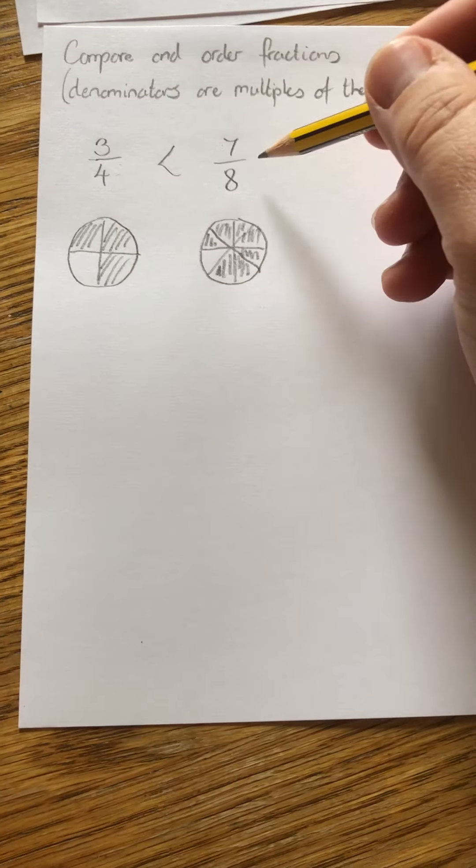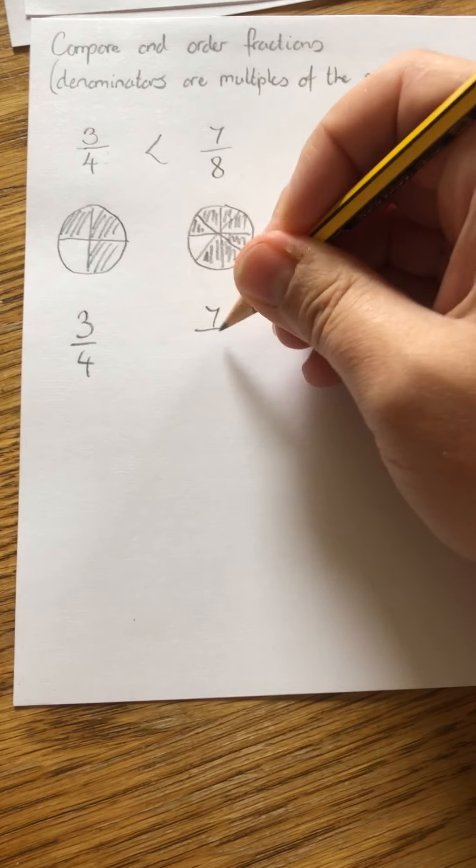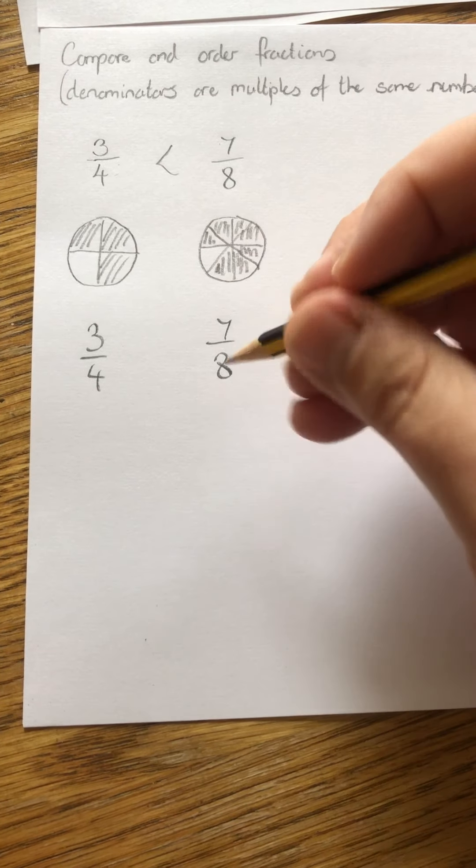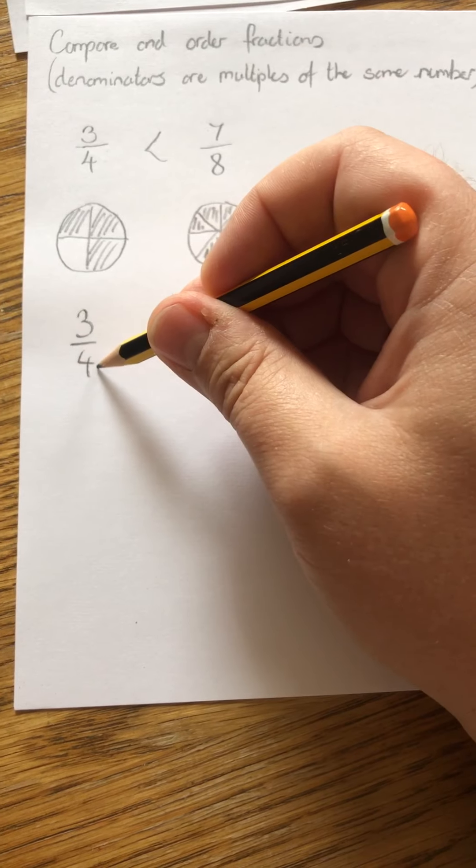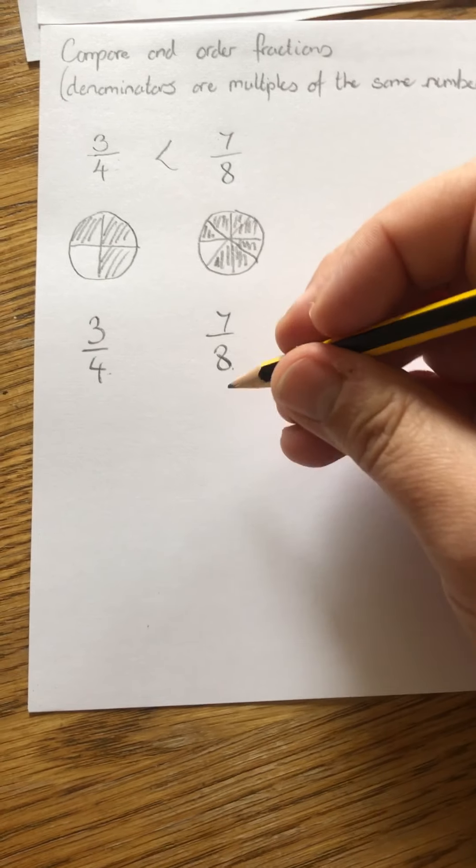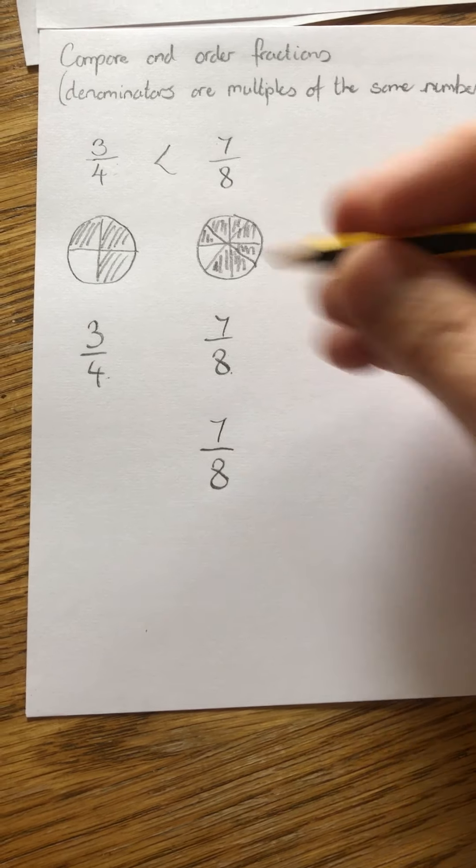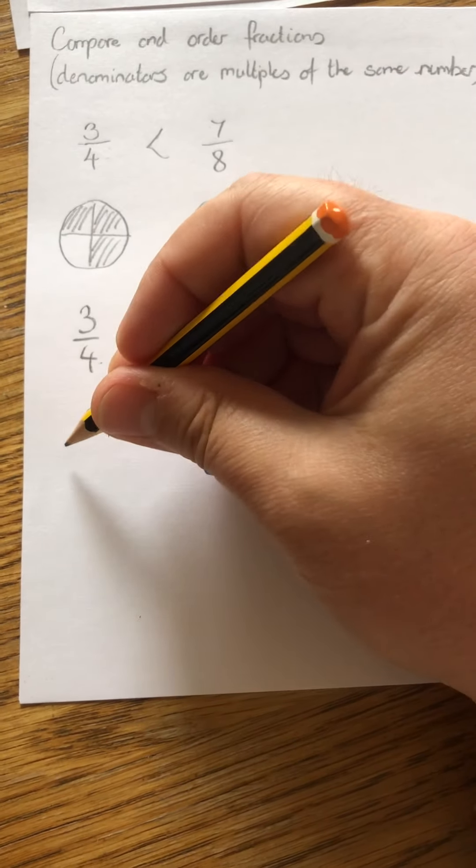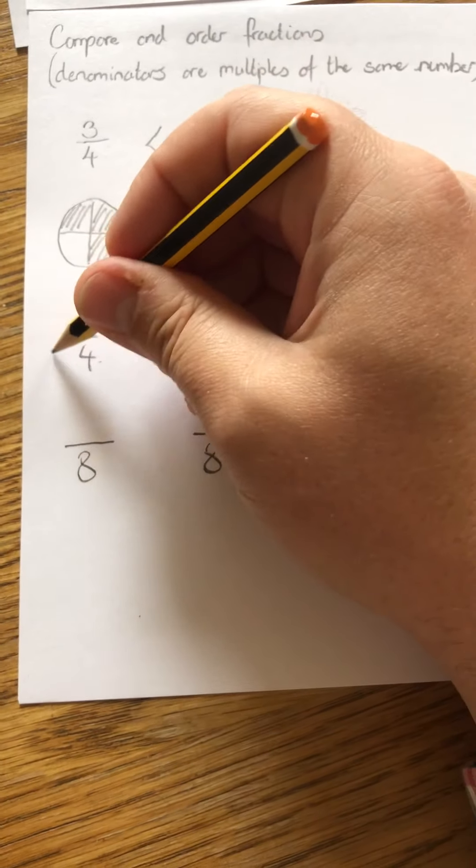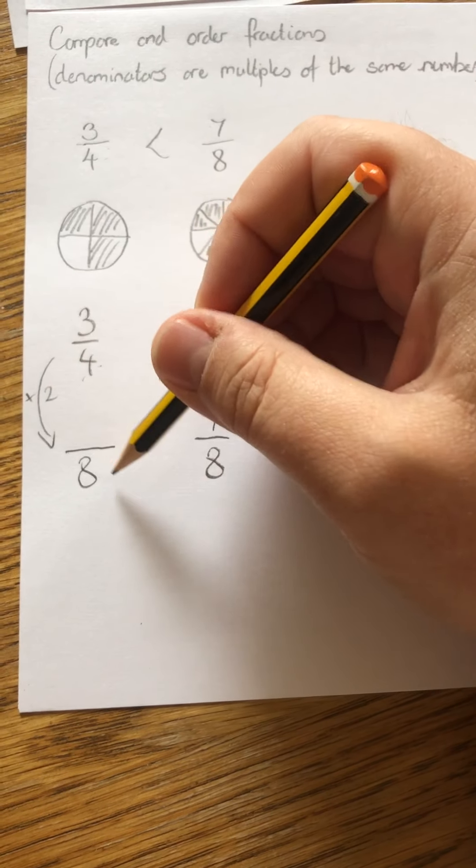Let's have a look at how we did this one without the drawing. So I've got three quarters and I've got seven eighths. I need to make these the same denominator. So I know that four goes into eight, so I'm going to use that. I'll keep my seven eighths. And I know that four can be multiplied to make eight. I multiply it by two. So four times two makes eight.